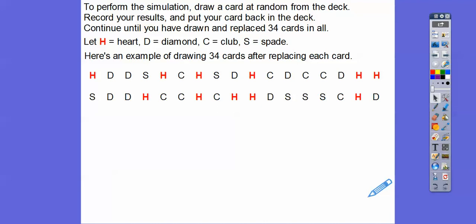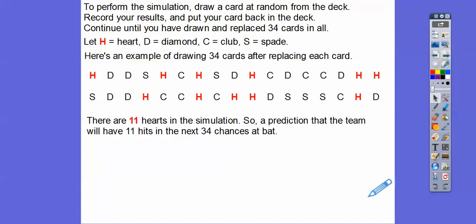Let's just save some time. Here's an example of drawing 34 cards after replacing each card. I've highlighted all the hits - a hit, a hit, a hit, which is heart, heart, heart. All these red H's represent hits, so 1, 2, 3, 4, 5, 6, 7, 8, 9, 10, 11. So 11 of these 34 cards would be the hits. The question asks how many hits you think they would get. So on that simulation, a good simulation would be 11. Would it be exactly 11? Probably not, but that would be a good simulation, as long as you can explain that.